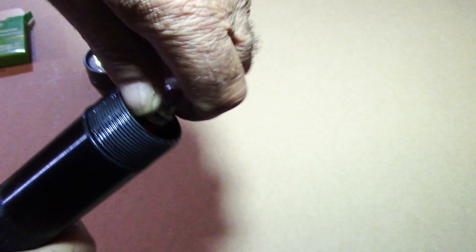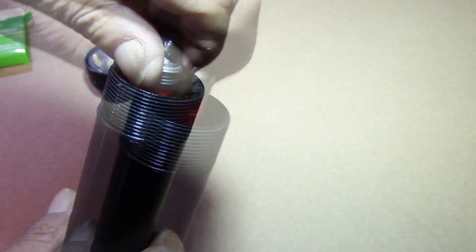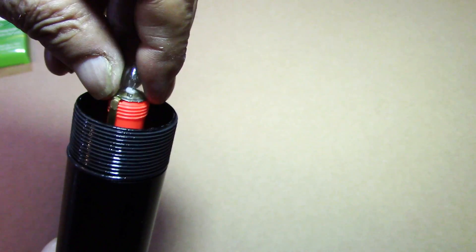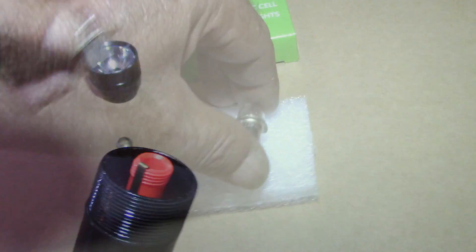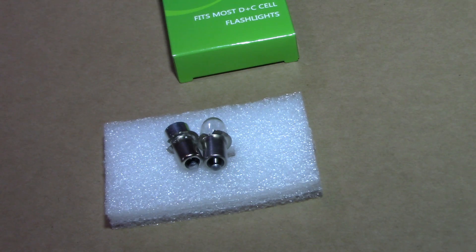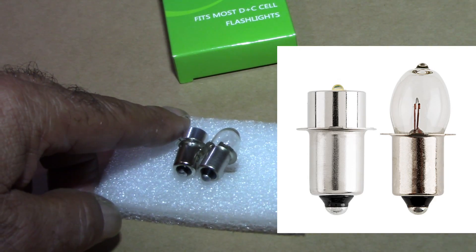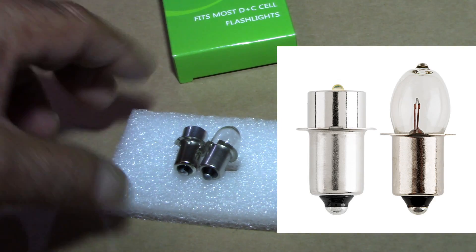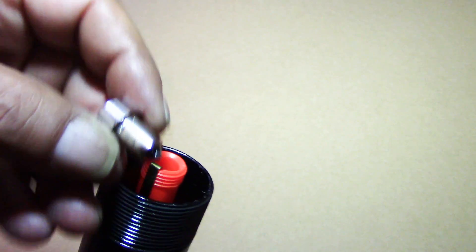Once the bulb is exposed, unscrew the ring that holds it in and then pull out the bulb. Placing them side by side to make sure they are similar in design and size.